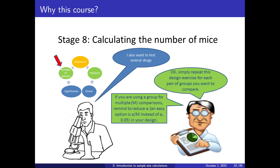A very easy way to correct for type 1 error inflation is the Bonferroni correction. If you are doing 40 experiments, instead of using alpha at 5%, you use 5% divided by 40. You increase the sample size of each individual experiment, but you ensure that overall the family of tests has a low probability of false positive. This is one of the most advocated measures currently promoted to increase reproducibility in science.